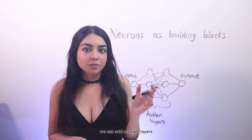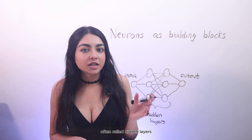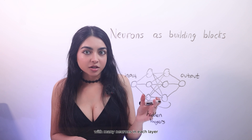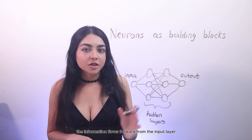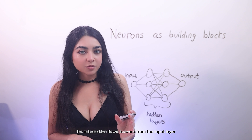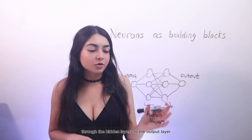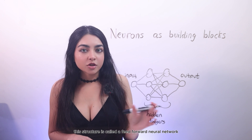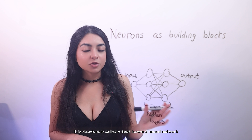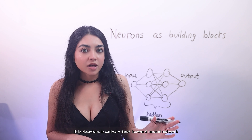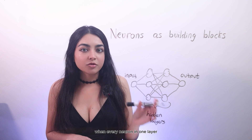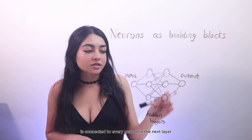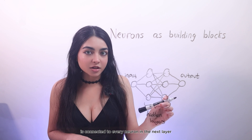We can add multiple layers, often called hidden layers, with many neurons in each layer. The information flows forward from the input layer through the hidden layers to the output layer. This structure is called a feed-forward neural network, and it's fully connected when every neuron in one layer is connected to every neuron in the next layer.